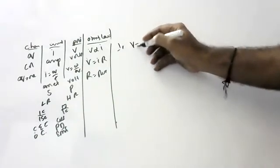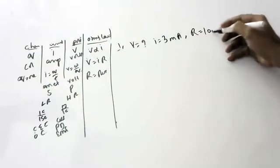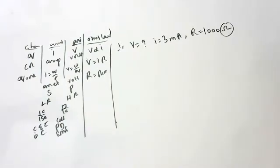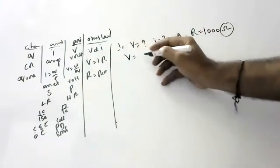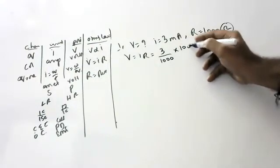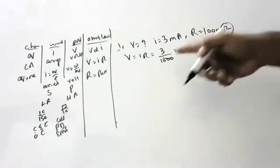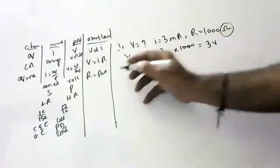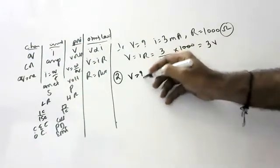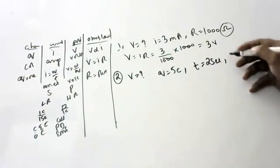Numerical 1: Find the potential when 3 milliamperes flows across a resistance of 1000 ohms. Using V = IR: V = 3×10⁻³ × 1000 = 3 volts. Ohm is represented by the omega symbol.